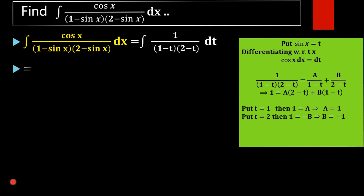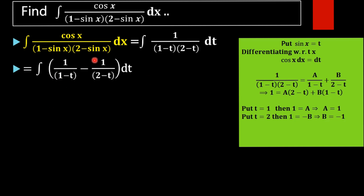Next, we utilize those values and rewrite the function. With A equal to 1 and B equal to negative 1, the integrand becomes: 1 by (1 minus t) minus 1 by (2 minus t), all multiplied by dt.